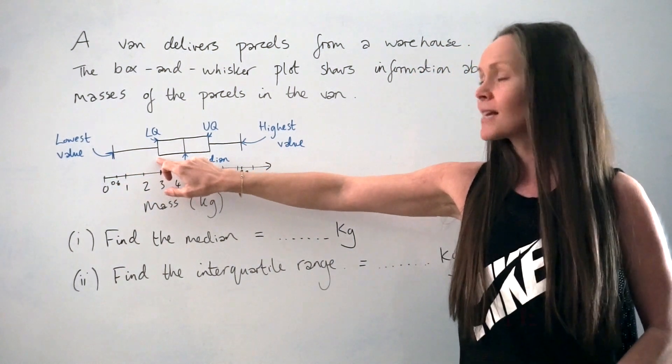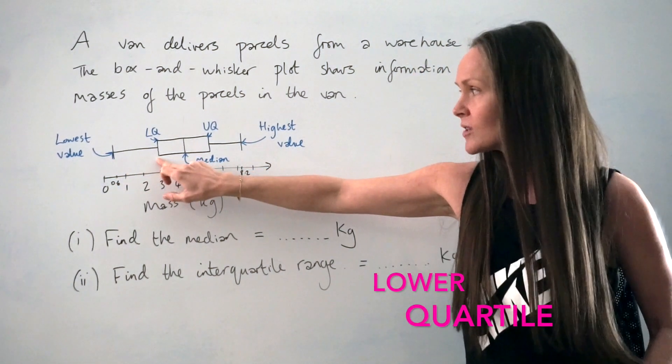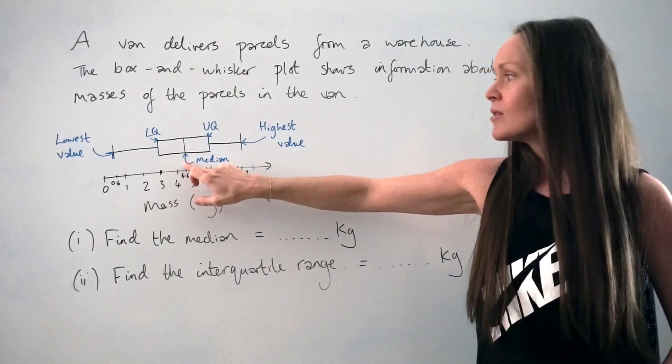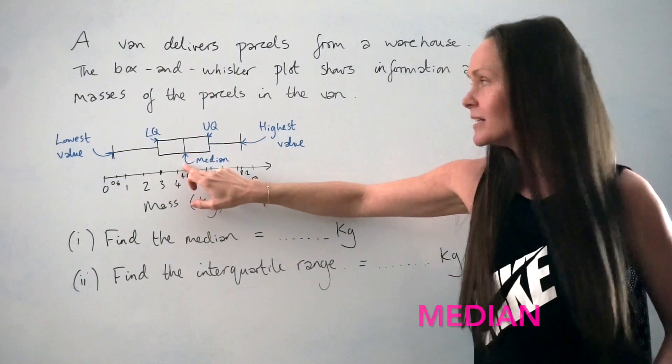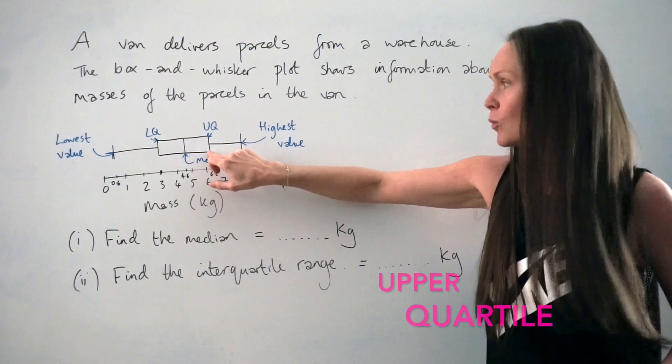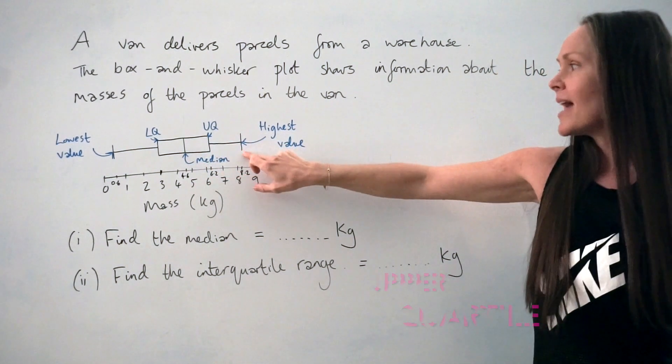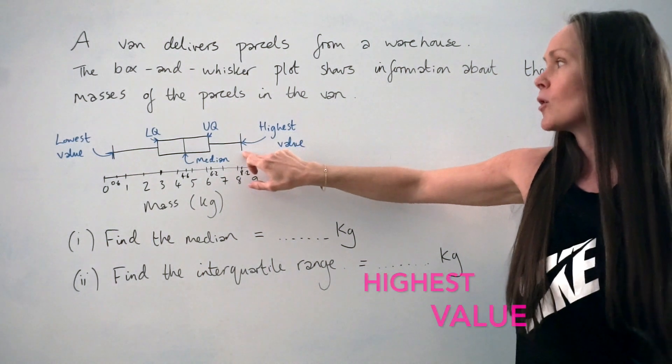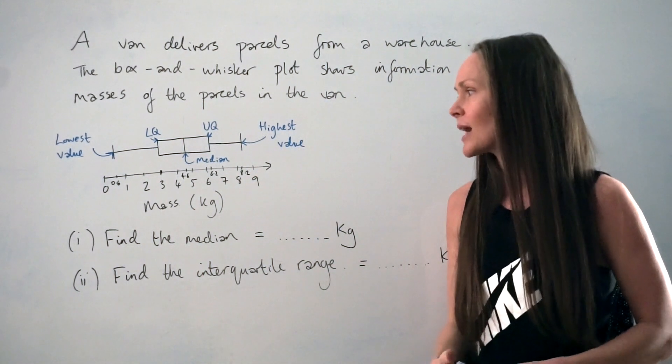Then the beginning of the rectangle is what we call the lower quartile. The line within the rectangle represents the median. The line that ends the rectangle is the upper quartile, and this line at the end is the highest value. So it would be the parcel with the highest mass.